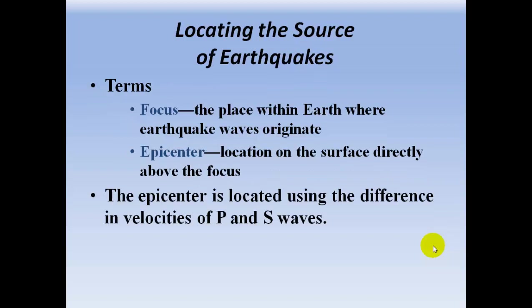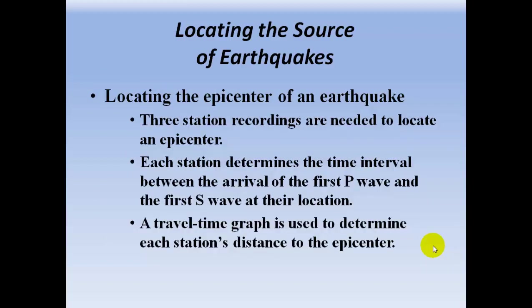The focus is a place within the Earth where the earthquake waves originate. The epicenter is the location on the surface directly above the focus. The epicenter is located using the difference in velocities of P and S waves. Three seismograph recordings are needed to locate the epicenter. Each station determines the time interval between the arrival of the first P wave and the first S wave, then uses a time travel graph to determine each station's distance from the epicenter.